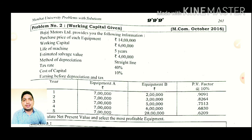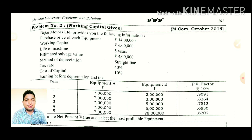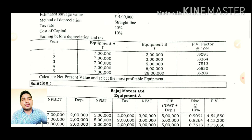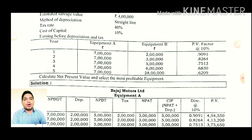You have to give the earnings before depreciation and tax for equipment A and B. Now, you will find out what to do and calculate the net present value. Then select the most profitable equipment.